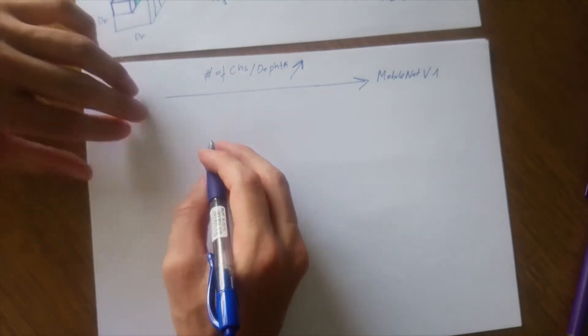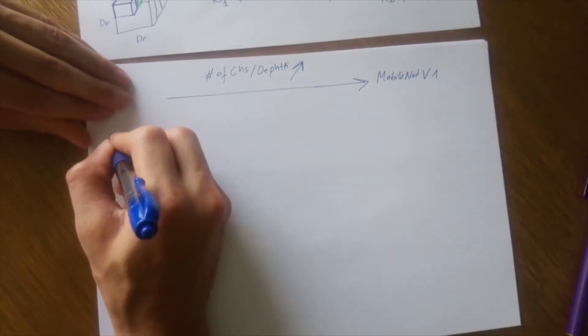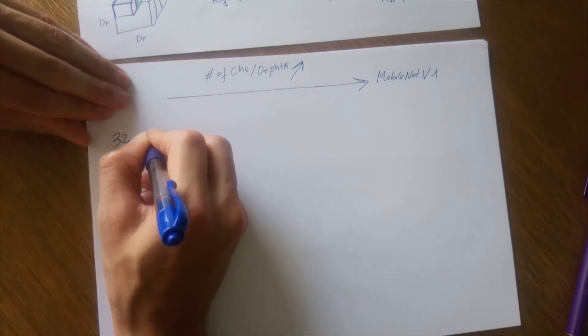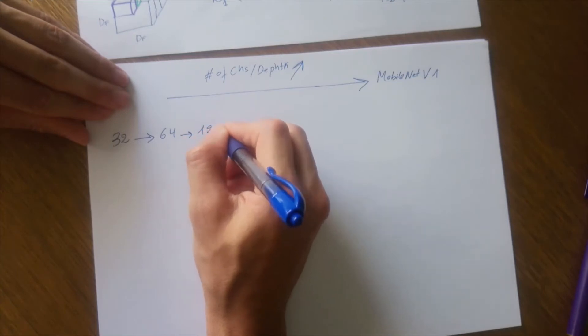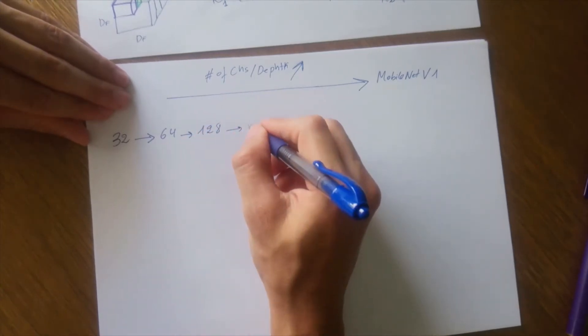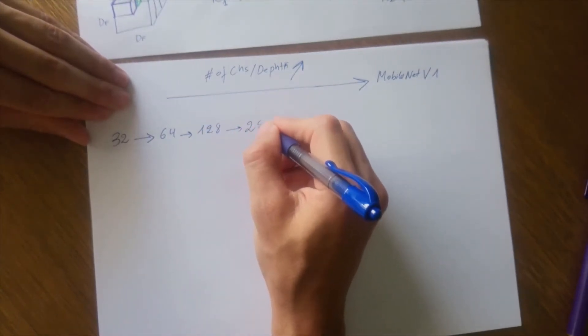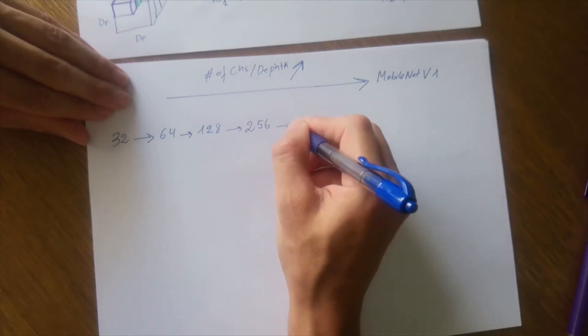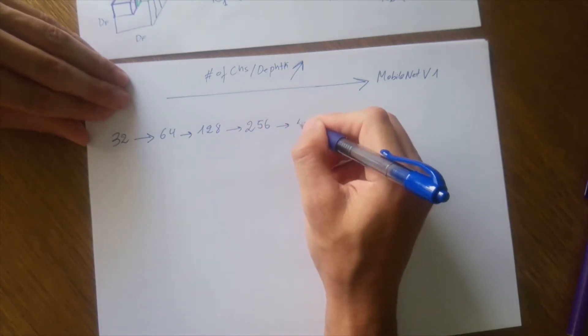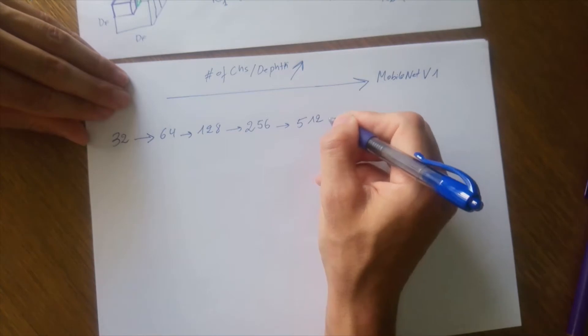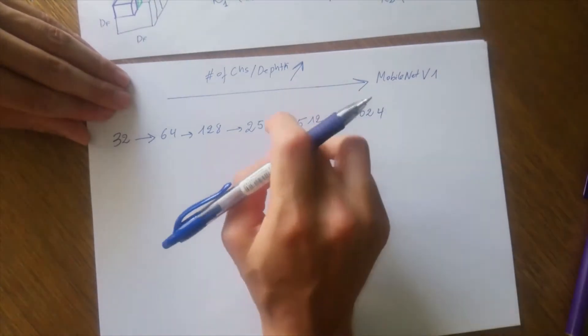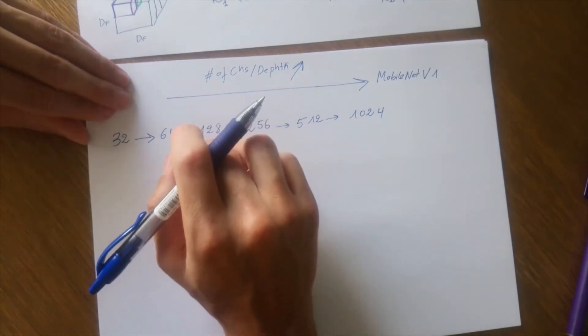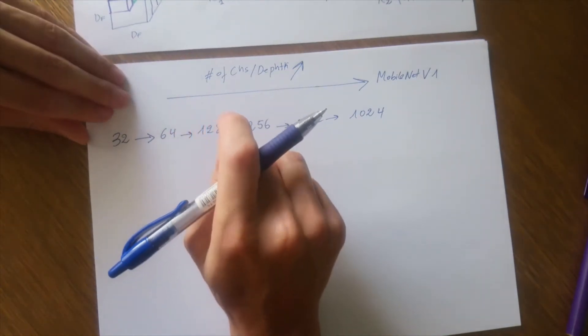So for example, at a given stage in the network, this starts by 32, then it becomes 64, then becomes 128, then 256, then 512, then 1024. So this is the number of channels in the output of each layer in the MobileNet V1.